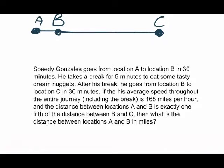Speedy Gonzales goes from location A to location B in 30 minutes. He takes a break for 5 minutes to eat some tasty dream nuggets. After his break, he goes from location B to location C in 30 minutes. If his average speed throughout the entire journey, including the break, is 168 miles per hour, and the distance between locations A and B is exactly one-fifth of the distance between B and C, then what is the distance between locations A and B in miles?